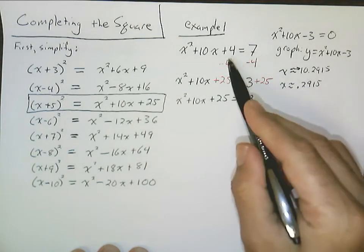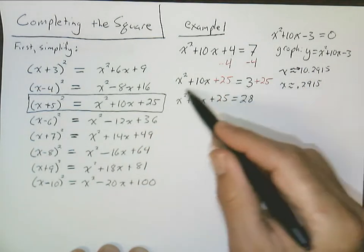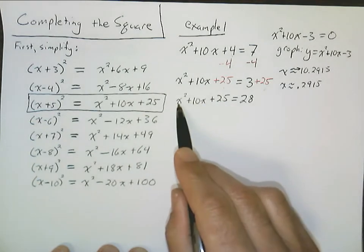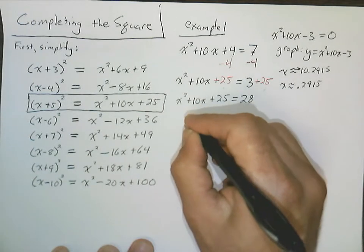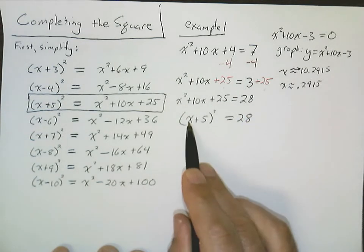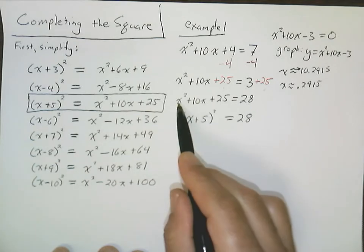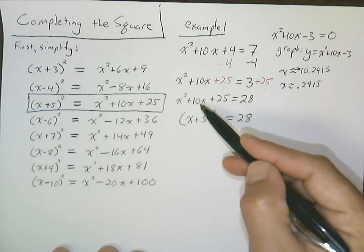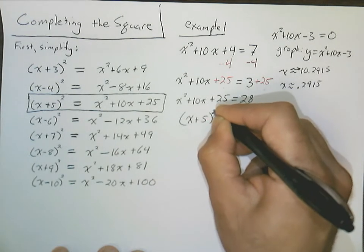We could have accomplished the same thing by just adding 21 to both sides — either way works fine. But now we've got exactly what we wanted on the left-hand side: x squared plus 10x plus 25 is exactly the same as x plus 5 quantity squared. Now we only see x in one spot. We've taken this linear term, the 10x, and kind of rolled it back into the squaring function. Now we can simply undo what's being done to x in reverse order of operations.